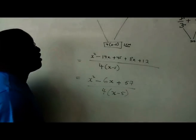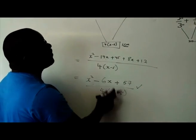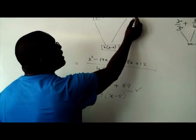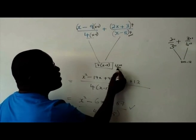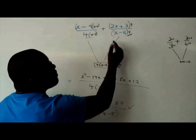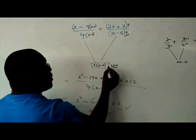The most important thing is that for us to be able to reach this stage, we had to first of all make the denominators the same. And we did that by finding the lowest common multiple. In this case, we simply multiplied the 4 and the x minus 5, and then we got that.